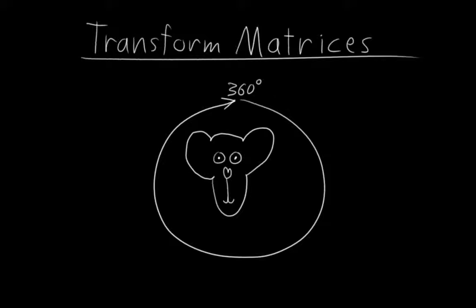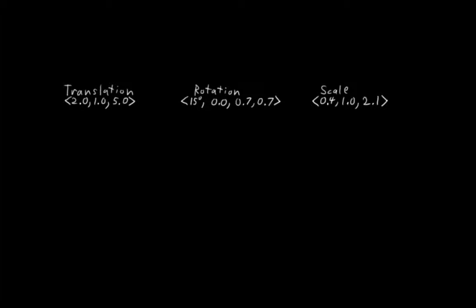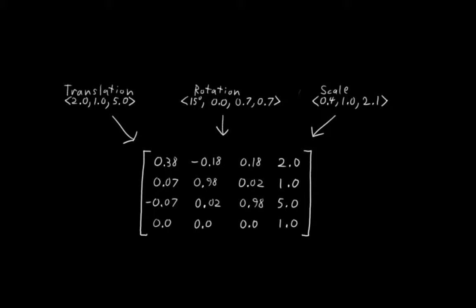I won't go into the math of transform matrices, but you should be aware that Blender uses them internally for representing and manipulating object transformations. When you, as a user, specify the location, rotation, and scale of an object in the N panel, or when those values are generated by animation, Blender actually converts them into a matrix for all of its internal object manipulations.